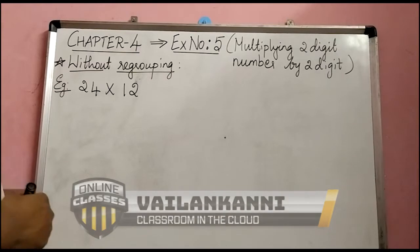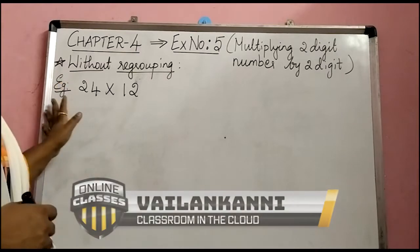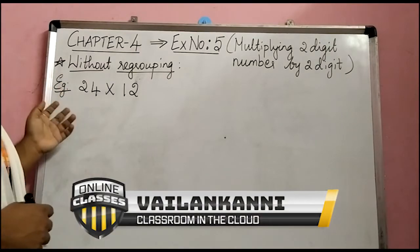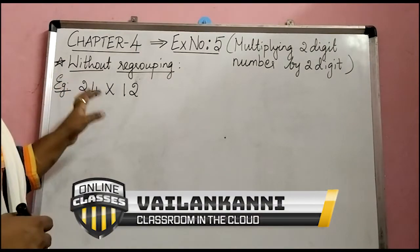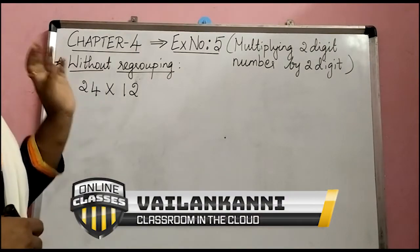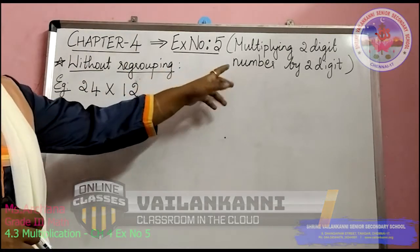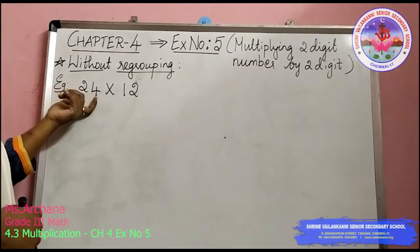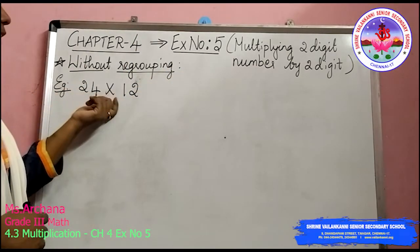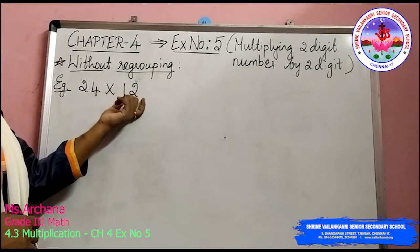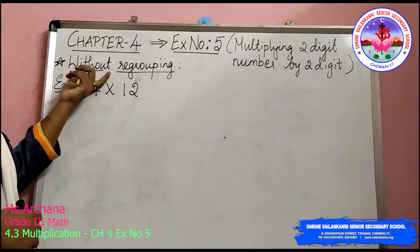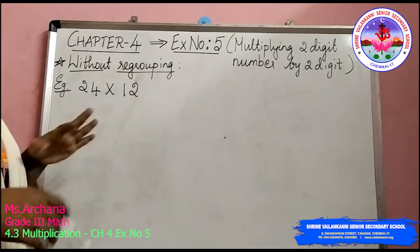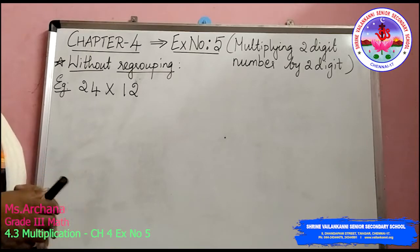Hello children. Today we are going to see exercise 5 under chapter 4. This is going to be multiplication with a two-digit number by a two-digit number — that is, two-digit multiplied with another two-digit number with the concept of without regrouping, that is without carry forwarding.